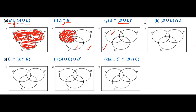Now we have to identify where A is. This region of A is here, this is also A, and this is also A. As there is intersection between them, we shade the region where double ticks are present. This is the only region with double ticks, so this is the final solution — our final shaded region.